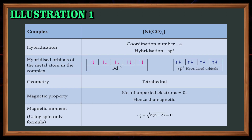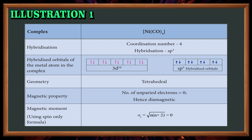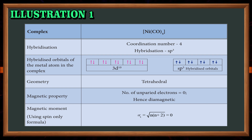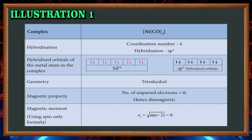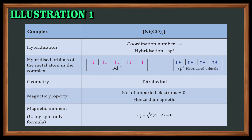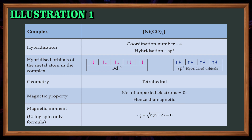Now for hybridization: coordination number 4, hybridization type sp3 — s orbital 1 cell, p orbital 3 cells. The hybridized orbitals of the metal atom in the complex fill the 4s and 4p orbitals, forming a tetrahedral complex geometry. Magnetic property: number of unpaired electrons is 0, hence it is diamagnetic.